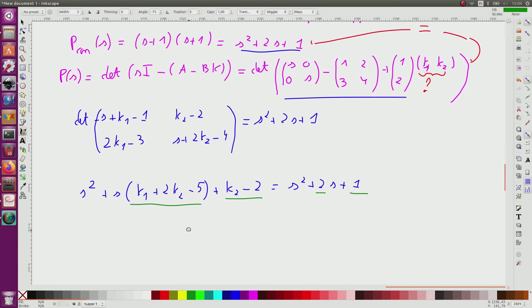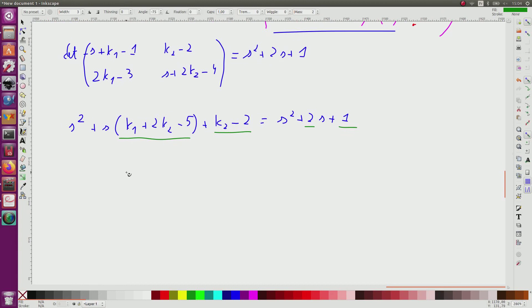So I can put this in a matrix form. And this gives me 1, 2, so for the 1 and for the 2 here, K1, K2 plus minus 5 due to this, is equal to 2 due to this.